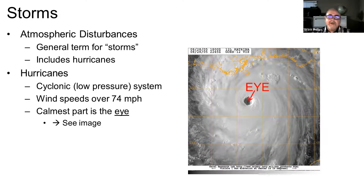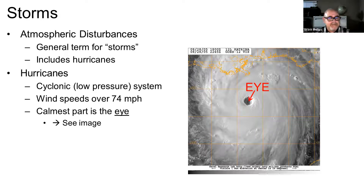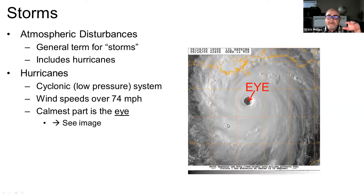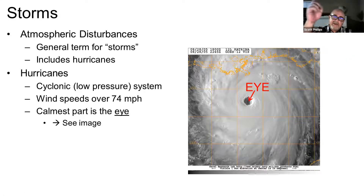Hurricanes are what we call cyclonic — it's an area of low pressure where the air is kind of spinning upward. Low pressure means the air is moving upward, and as it does, it kind of spins around because of the Coriolis force.